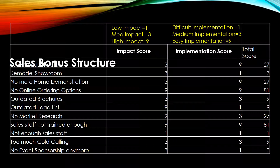A medium implementation is something that can be done and is going to require a little bit of work — maybe a follow-up meeting or two and gathering some data. It's definitely doable; we need to assign a resource to it, but it can be done. Easy implementation means the decision makers are in the room right now and can do it from their laptop or as soon as they get back to their desk, with zero resistance. That's the general scale you want to use.